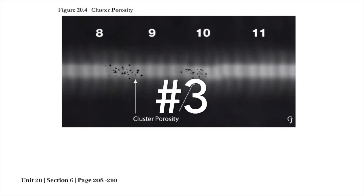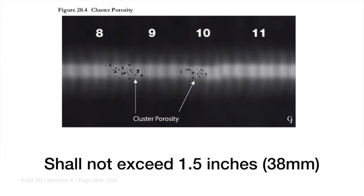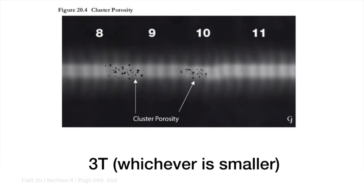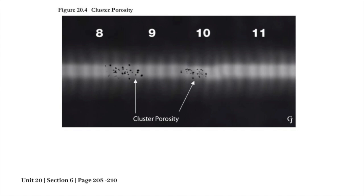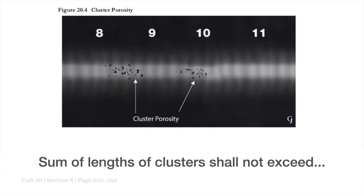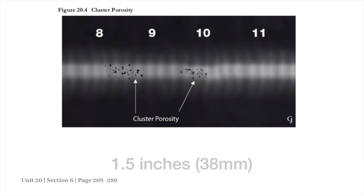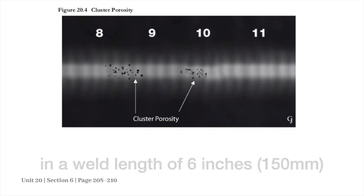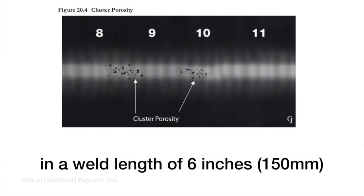Three: the length of an acceptable cluster of rounded indications shall not exceed 1.5 inches, 38 millimeters, or 3T, whichever is smaller. Where more than one cluster is present in the weld, the sum of the lengths of clusters shall not exceed 1.5 inches, 38 millimeters, in a weld length of 6 inches, 150 millimeters.